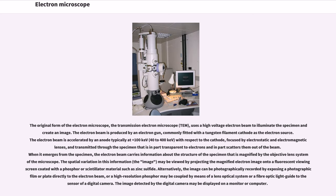with respect to the cathode. Focused by electrostatic and electromagnetic lenses, and transmitted through the specimen that is in part transparent to electrons and in part scatters them out of the beam. When it emerges from the specimen, the electron beam carries information about the structure of the specimen that is magnified by the objective lens system of the microscope. The spatial variation in this information, the image, may be viewed by projecting the magnified electron image onto a fluorescent viewing screen coated with a phosphor or scintillator material such as zinc sulfide.